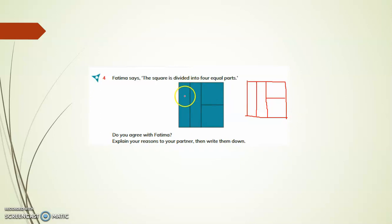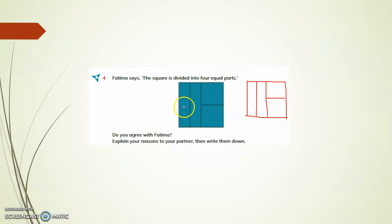These two are equal, these two are equal, and this is half — this portion is half. So when you look at this, you can see this is one by four, one by four, one by four, one by four.